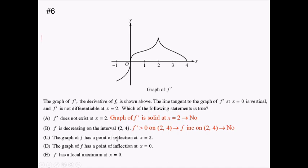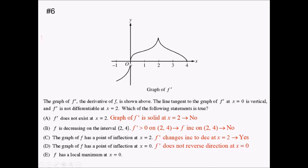Next: the graph of f has a point of inflection at x equals two. At x equals two, f prime is changing from increasing to decreasing. That tells us f double prime is changing positive to negative, so yes, we will have a point of inflection — we should pick this answer. Let's check D and E. Choice D: graph has a point of inflection at zero. At zero, we're not reversing direction for f prime — we're increasing until zero and still increasing after. So that's a no. Choice E: f has a local max at x equals zero. Here f prime is changing negative to positive, which would be a local min, not a max. So that's a no as well. We go back to C and pick that one.